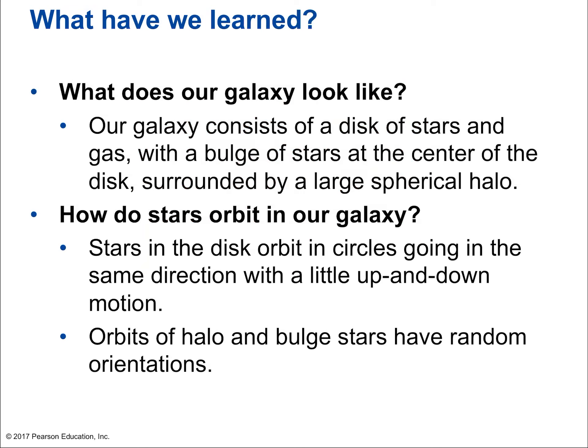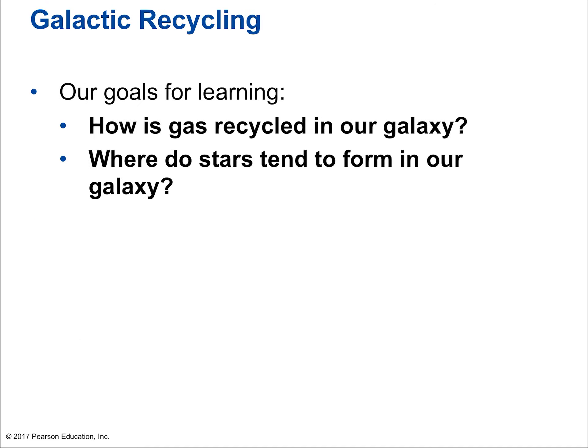Our galaxy consists of a disk of stars and gas with a bulge of stars at the center, surrounded by a large spherical halo. Stars in the disk orbit in circles going in the same direction with a little up-and-down motion, while orbits of the halo and bulge stars have random orientations.